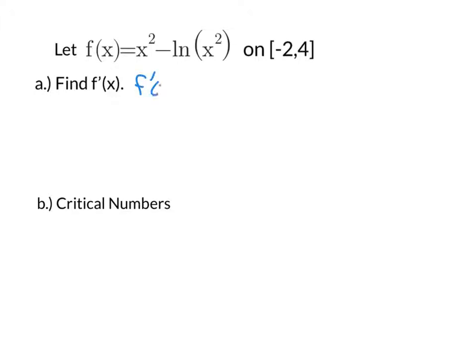So f prime of x is going to equal 2x minus, and when we get to that natural log we're going to have to use the chain rule. So the derivative of natural log is 1 over that x squared times the derivative of x squared, which is 2x. We should clean this up a little bit. We'll have 2x minus 2x over x squared, so this x will cancel with one of those. And we're looking at 2x minus 2 over x.